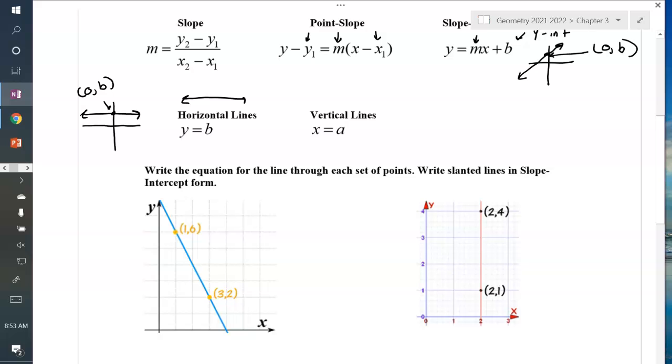Vertical lines, those go up and down. And their form is x equals a. So you have a graph, you have a vertical line, and it's crossing the x-axis at the point a, 0. So if it's vertical, all you've got to do is take that x-coordinate, and then you write x equals whatever the x-coordinate is.